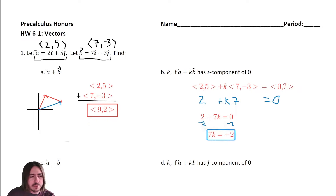Letter C: A minus B. We set it up the same as letter A except instead of adding we subtract, changing the plus to a minus. Two minus seven is negative five, and five minus negative three is like five plus three which is eight. So the result is negative five comma eight.